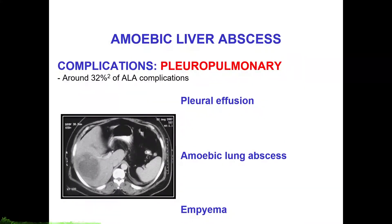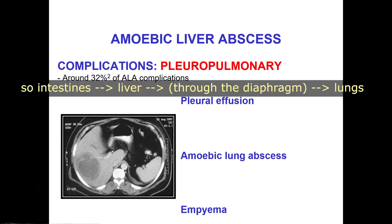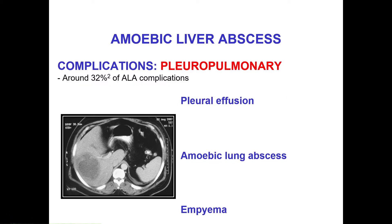Other possible complications of amoebic liver abscess as well as intestinal amoebiasis include pleuro-pulmonary amoebiasis, which accounts for around 32% of all amoebic liver abscess complications. From the intestines, the infection can go up into the liver forming amoebic liver abscess, and then level up into the lungs to form pleuro-pulmonary amoebic abscess. This can manifest as pleural effusion, amoebic lung abscess, and even empyema. Pleural effusion may develop in the right pleural cavity in association with liver abscess in the upper part of the right lobe due to their proximity.